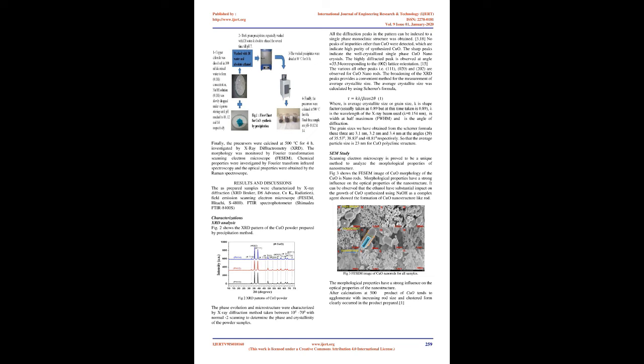Synthesis procedure: CuO nanostructure was synthesized by precipitation method using copper chloride (CuCl₂). First, copper chloride was dissolved in 100 ml deionized water to form a 0.1 M concentration. NaOH solution (0.1 M) was slowly dropped under vigorous stirring until pH reached 10, 12, and 14 respectively, so three different precursor ratios were taken: pH 10, pH 12, and pH 14. Black precipitates were obtained and repeatedly washed by ultra-pure deionized water and absolute ethanol sequentially until pH reached 7.